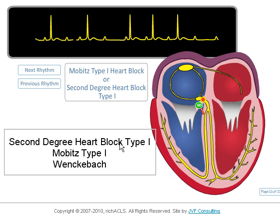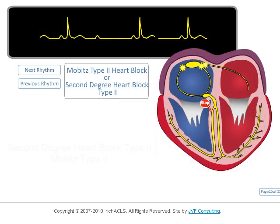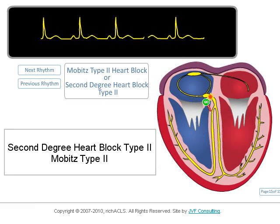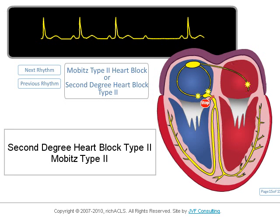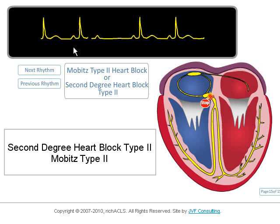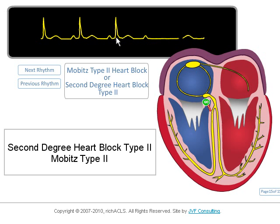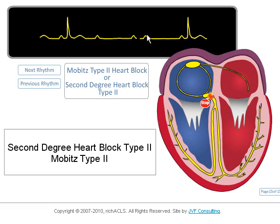Other than the AV node needing an occasional rest, the conduction process is normal. Here is second-degree heart block type II. In this rhythm, the PR interval is consistent, unlike the progressive lengthening PR interval with the type I heart block. Like type I heart block, there is an occasional beat not conducted and the problem again lies with the AV node.